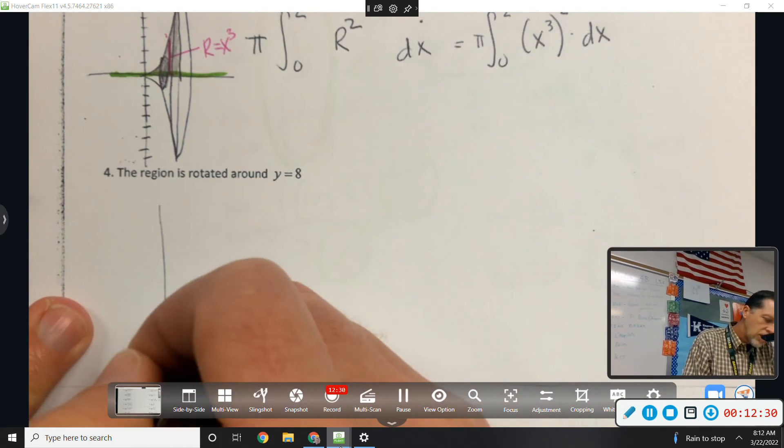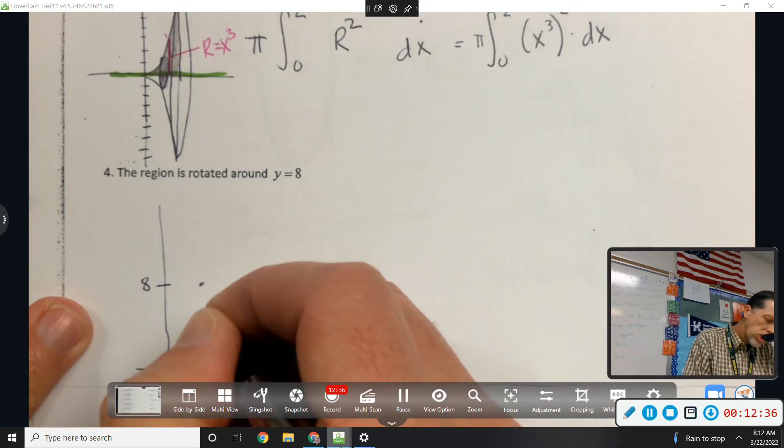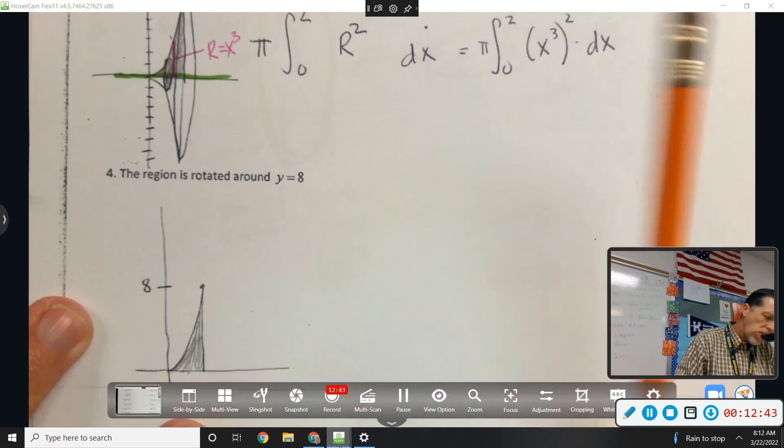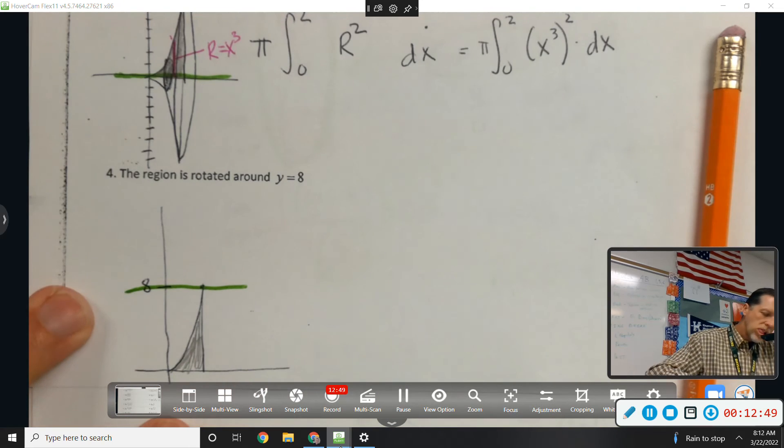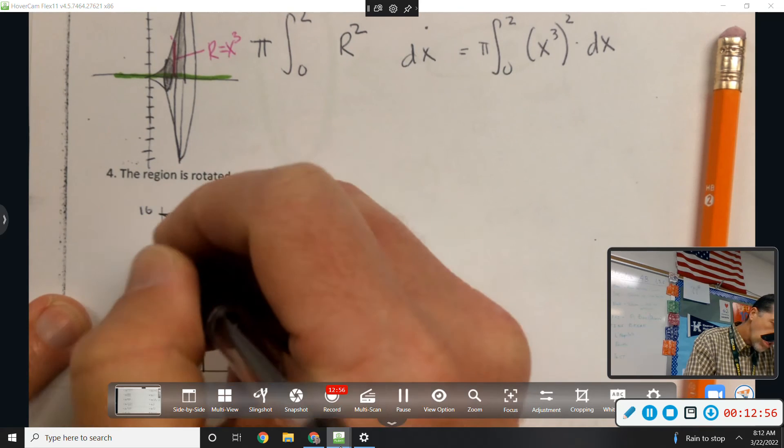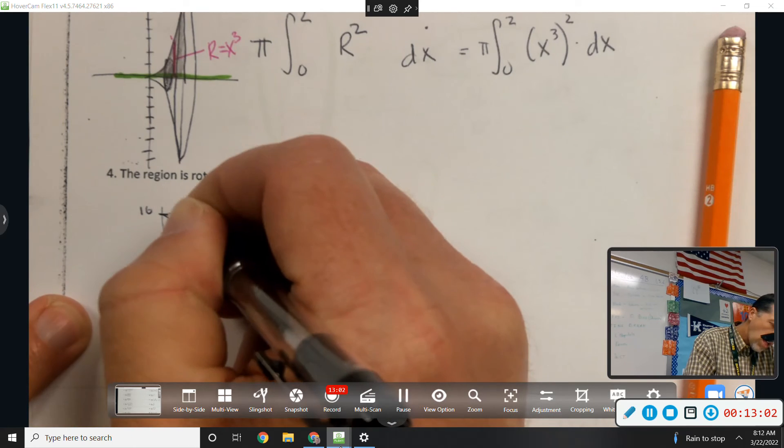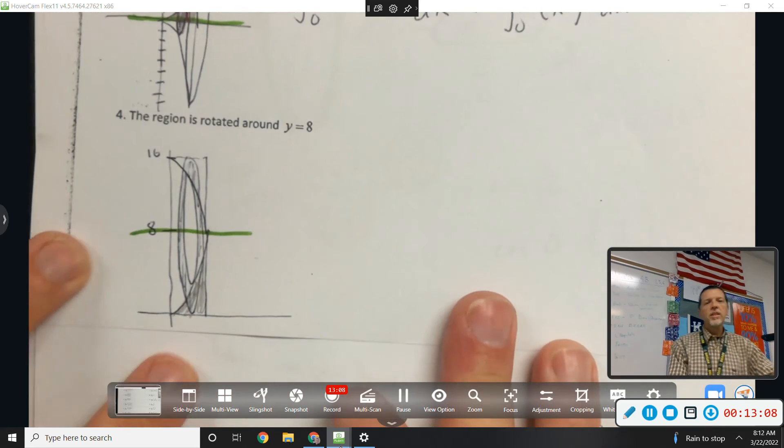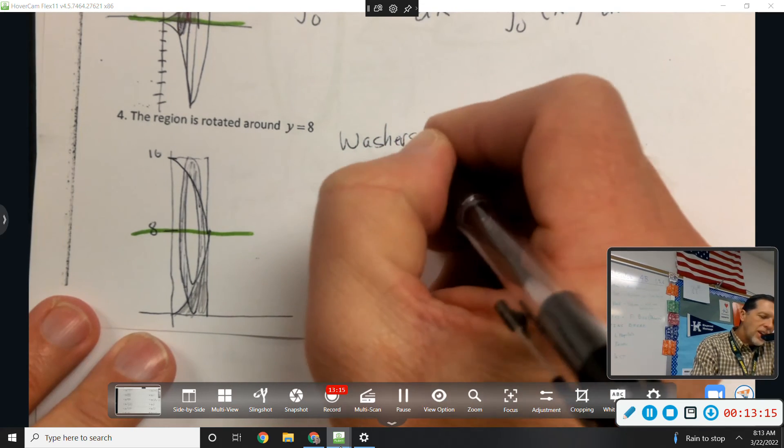So same region. Uh-oh. Rotate it around y equals 8. It's the same base region. Y equals 8. Kind of tricky to see this one, but disc or washers on this one? Washers, so I need a big R squared and a little R squared.